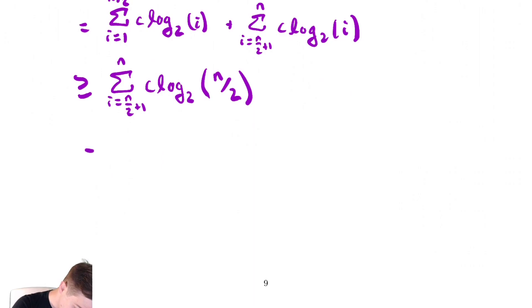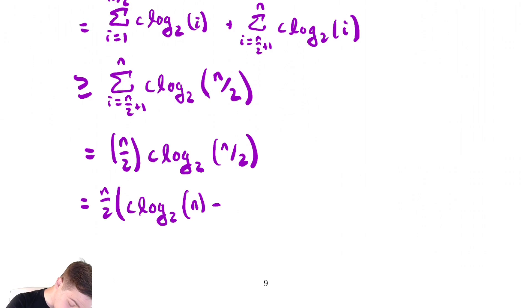So, now we have a fixed thing we are adding up a fixed number of times. So, this is equal to n minus n over 2 plus 1 plus 1, that will evaluate to n over 2 times c times log base 2 of n over 2. So, just for completeness' sake, let's see what this simplifies to.